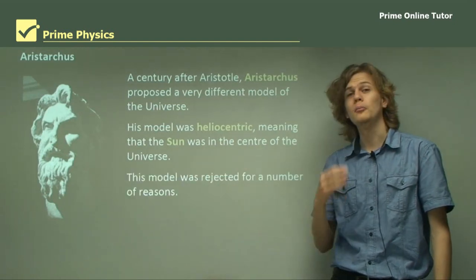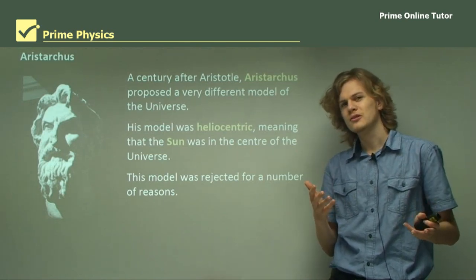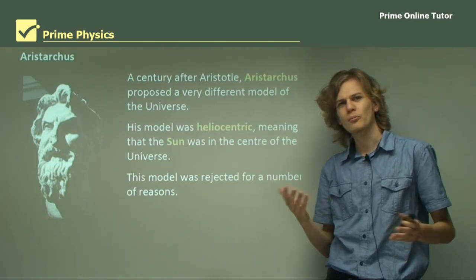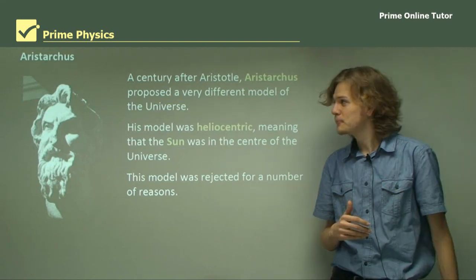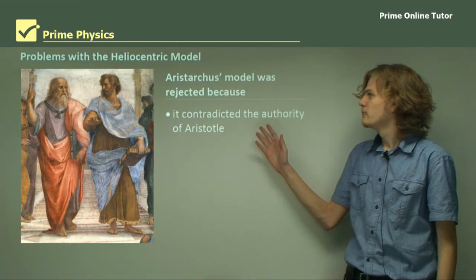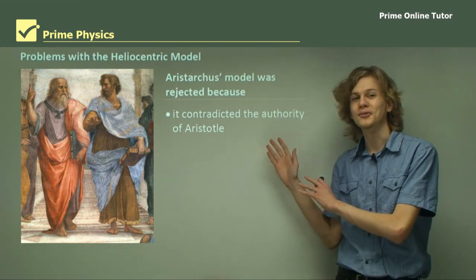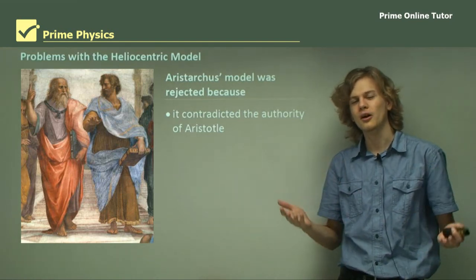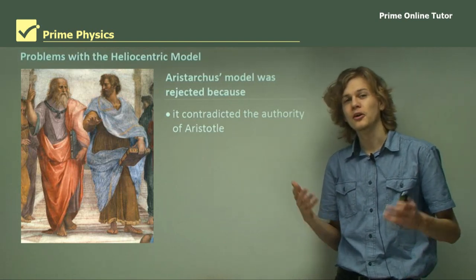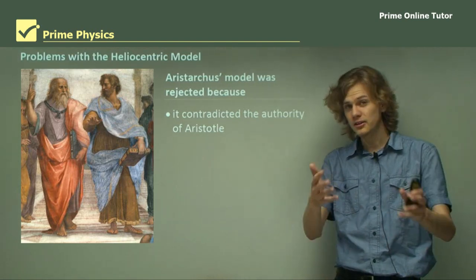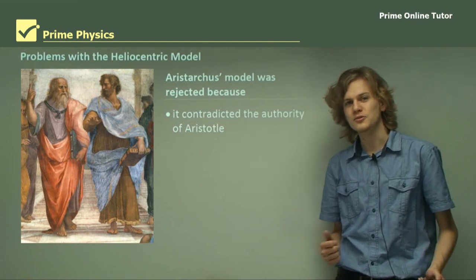This model was rejected for a number of reasons. The first reason was not really a problem with the model so much as a problem with the person who created it. It was rejected simply because it contradicted the authority of Aristotle, who was a very old and respected Greek philosopher. People took Aristotle's ideas very seriously, so ideas that went against them, like Aristarchus's heliocentric model, were often dismissed.